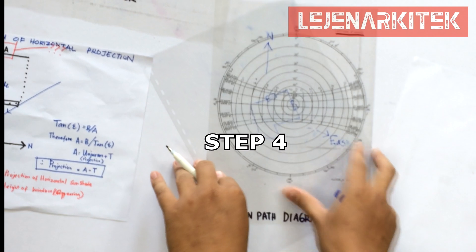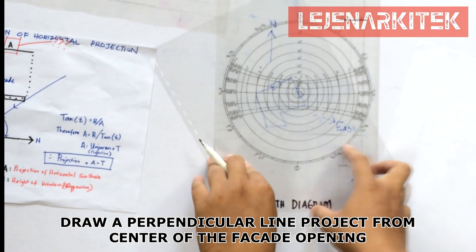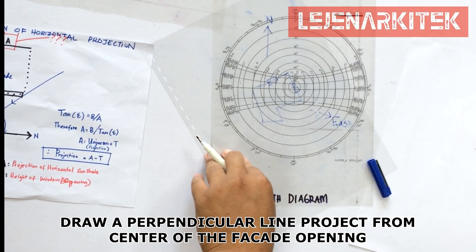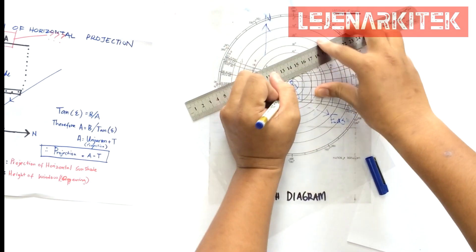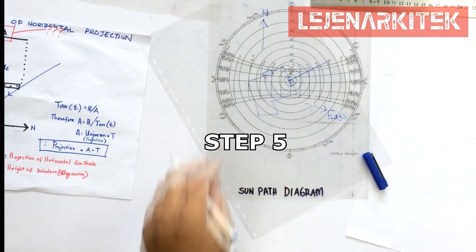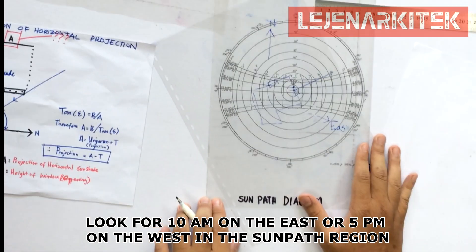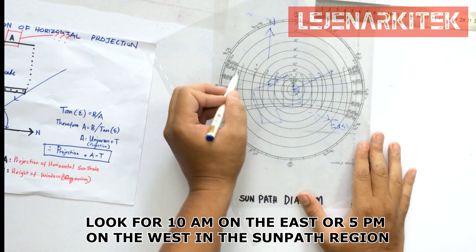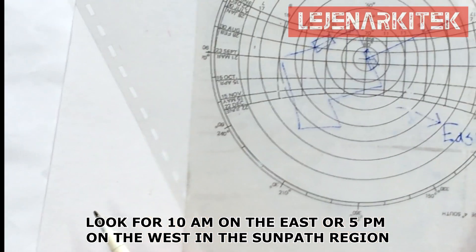Step four, draw a perpendicular line from the center of opening. Step five, look for 10am on the east or 5pm timeline on the west in the sun path region. In this diagram, we're going to show you the 10am east.